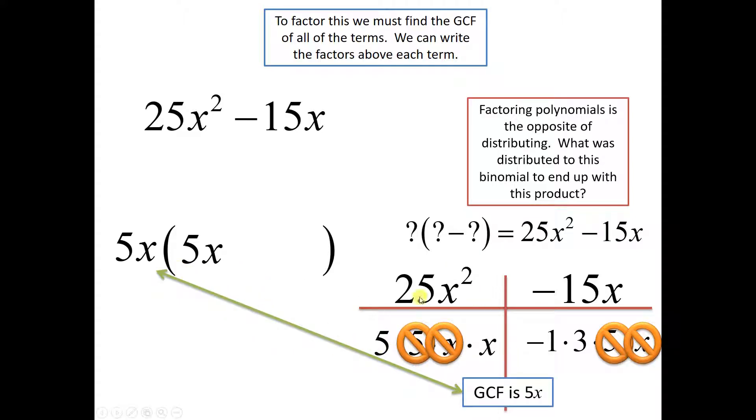Now, what's left over from this 25x, which was our first term, is 5x. You see? That's why 5x goes right there. And then what's left over from the other is a minus 3. So this 25x² minus 15x factored would be 5x times the quantity 5x minus 3.